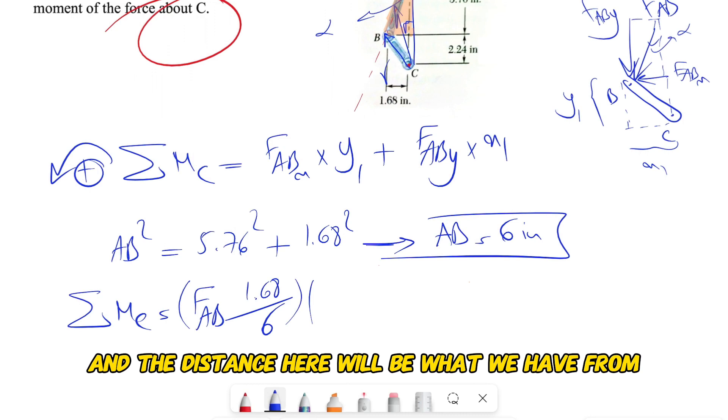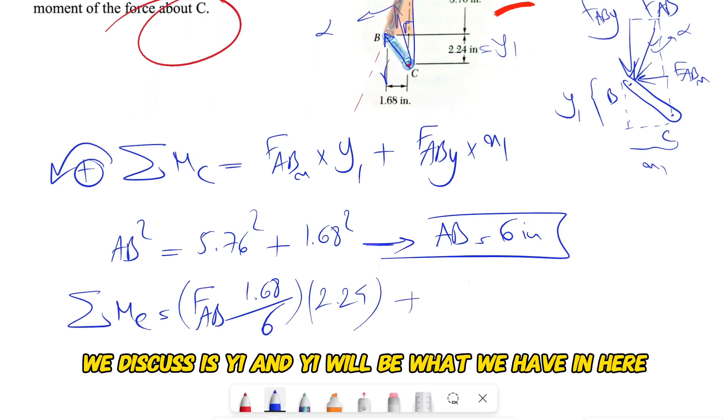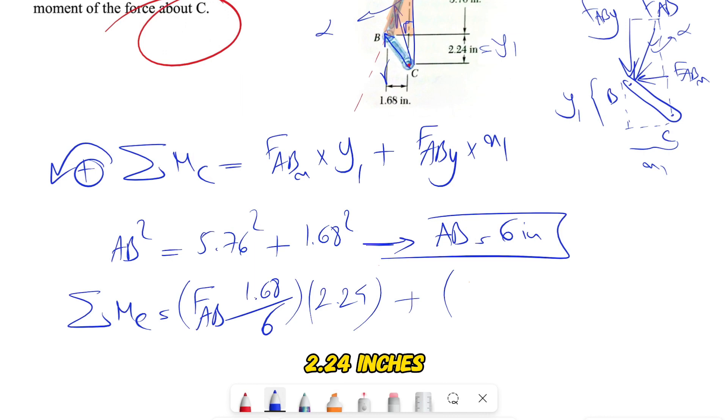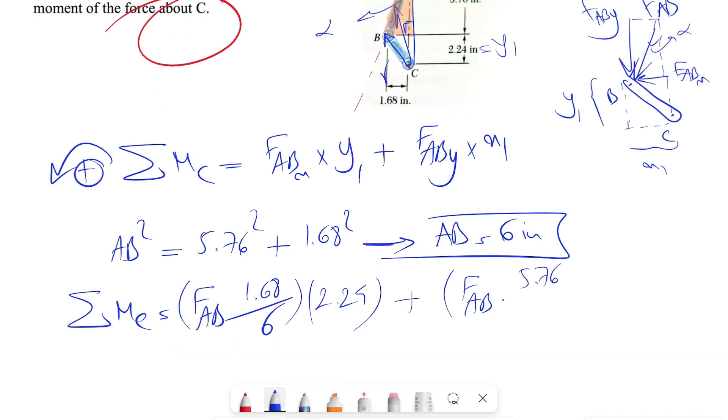So that's our first moment. The second one we have FABy, which this time we will have FAB cosine of alpha.